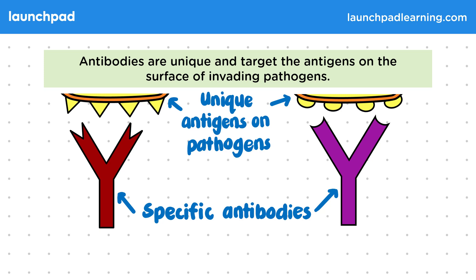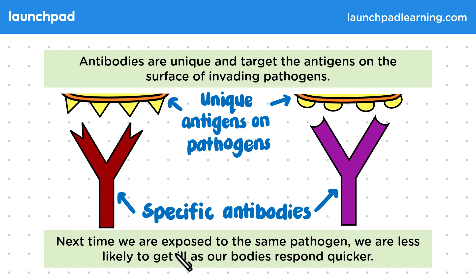The antibodies also help to clump the pathogens together so they can be more easily engulfed and destroyed by the phagocytes as we saw previously. Next time we are exposed to the same pathogen we are less likely to get ill as our bodies respond quicker. The science behind this is the basis of vaccines, which also form part of this course.